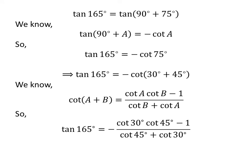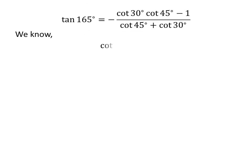Applying the above identity gives us tangent of 165 degrees is equal to minus cotangent of 30 degrees times cotangent of 45 degrees minus 1, upon cotangent of 45 degrees plus cotangent of 30 degrees. As we know, cotangent of 30 degrees is equal to square root of 3 and cotangent of 45 degrees is equal to 1.